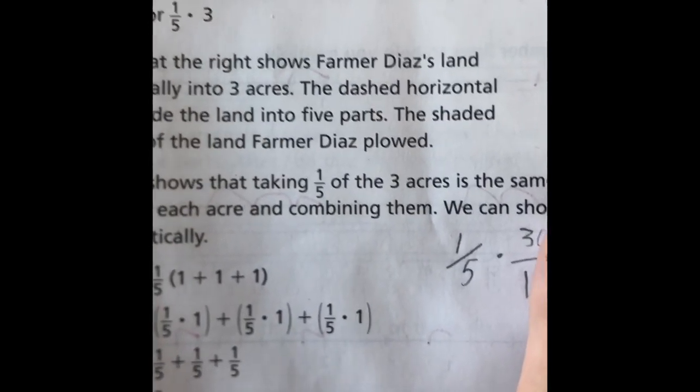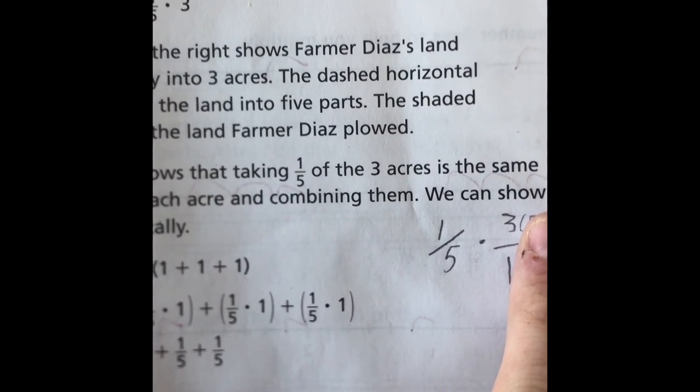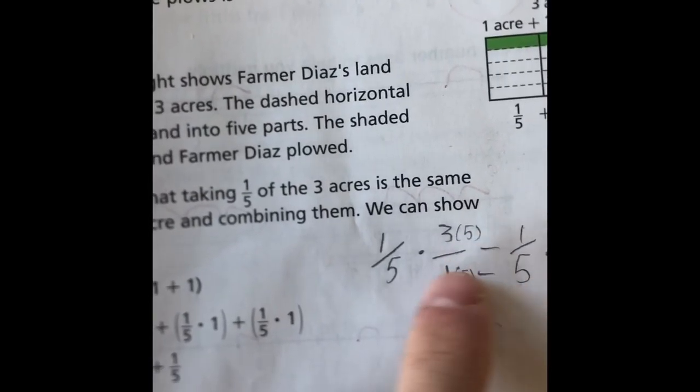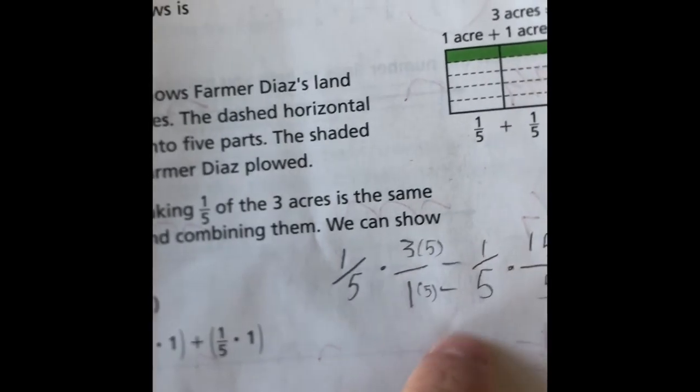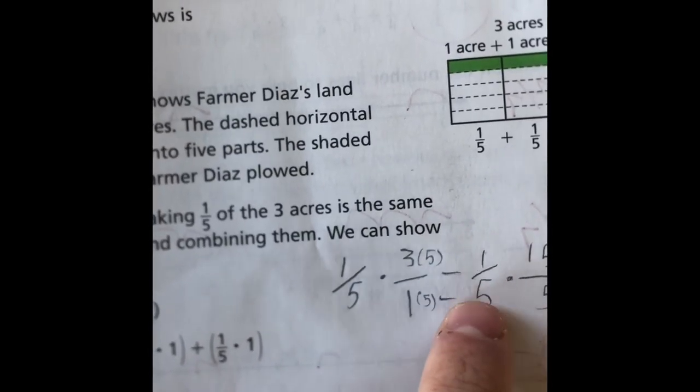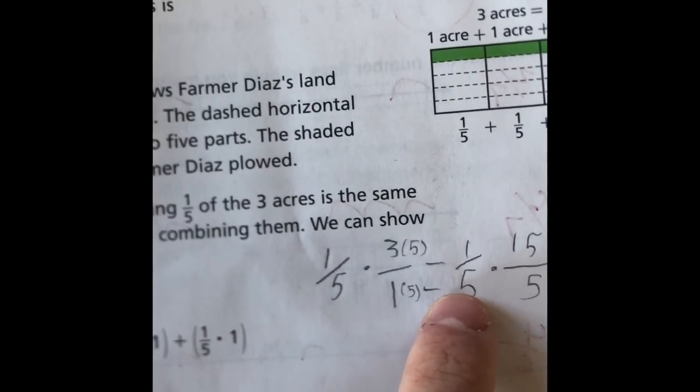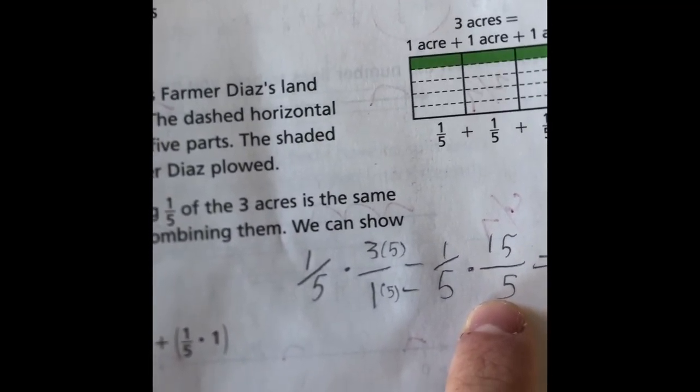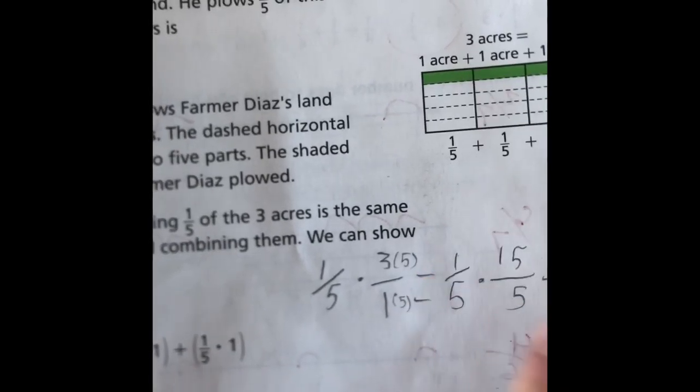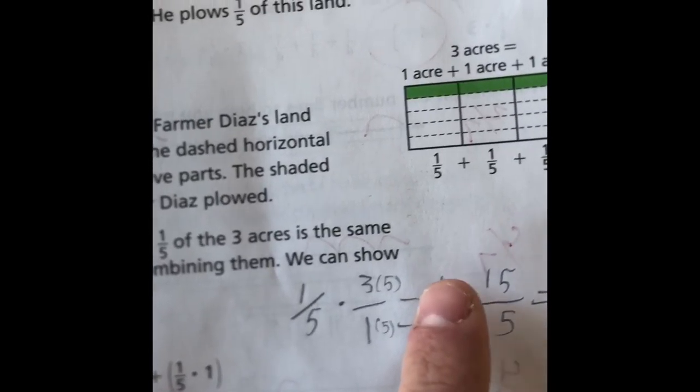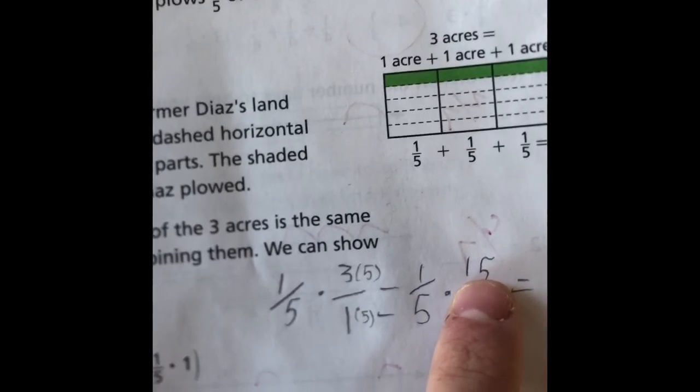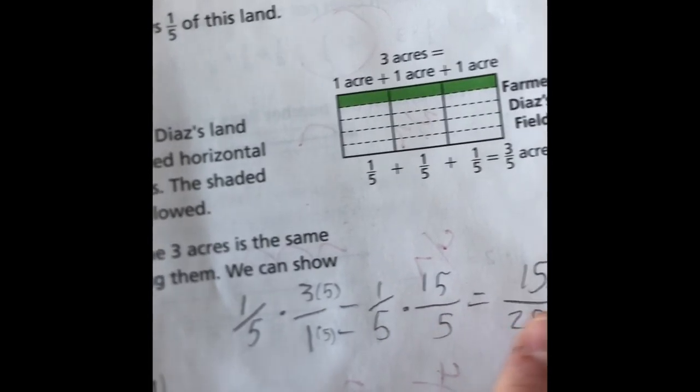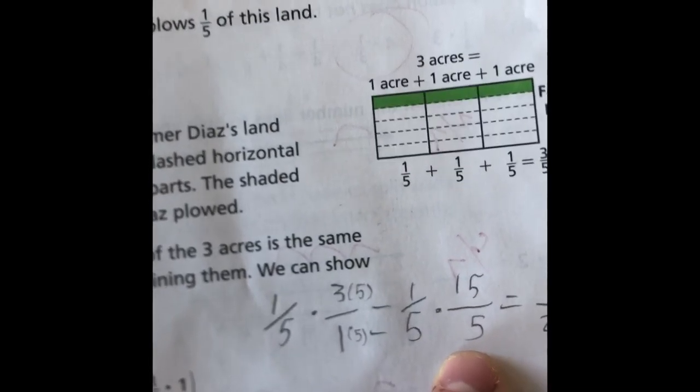What would we do to find the common denominator? Which is the first step. Yes, we would multiply each side by five to find the common denominator. So we carry over our one-fifth, and then after multiplying one and three by five, we get 15 over five. The next step is we multiply across. So we do one times 15, which gives us 15, and then we do five times five, which equals 25.